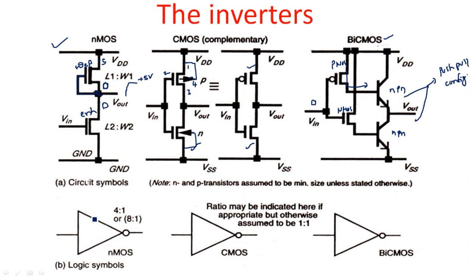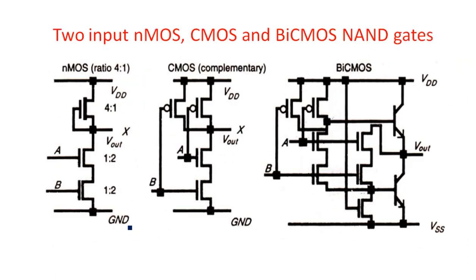For NAND gates, the logic symbol is a normal buffer followed by a bubble — an inverter phase. The two-input NAND realization means output Y equals AB bar. In NMOS logic, the pull-up is always a depletion mode transistor, and in the pull-down, A and B are in series, realizing A·B which is complemented by default from MOS technology.